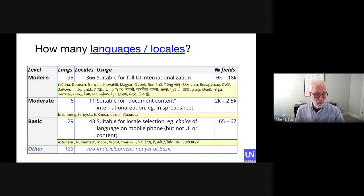The last category here are the other ones that have not yet reached a basic level. There are about 183 of these. These are typically languages that we call digitally disadvantaged languages. You'll hear more about that in some of the other presentations.